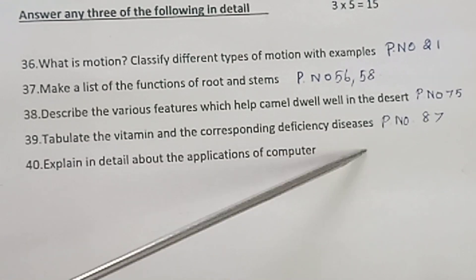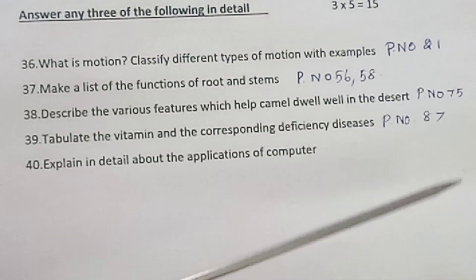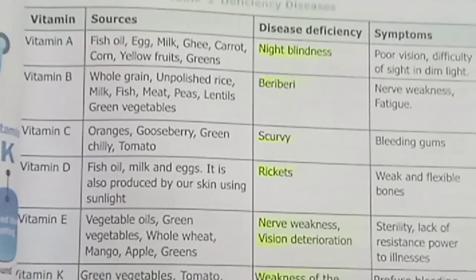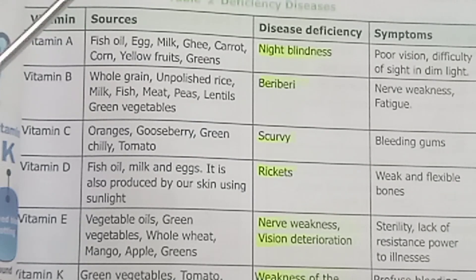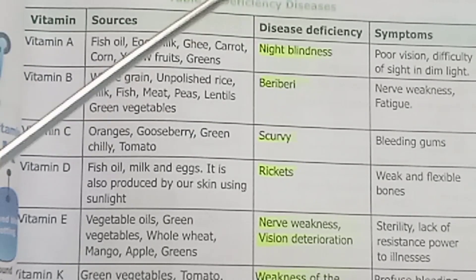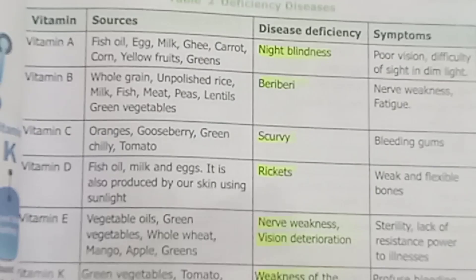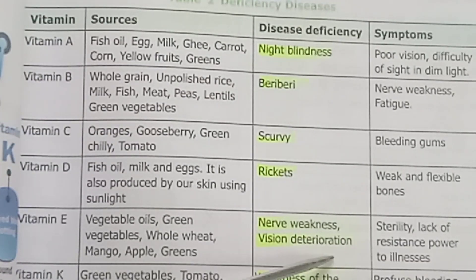Question 39. Tabulate the vitamins and the corresponding deficiency diseases. Page number 87. Vitamins, disease deficiency. In the table format, tabulation form, this is the answer.